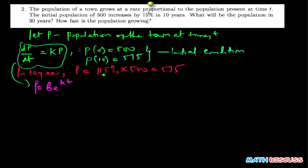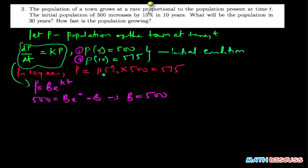The next thing is to implement the initial condition. This is the first condition I'm going to implement. When t equals 0, my p is 500. So: 500 equals b times e to the power 0, and this equals b. This implies that b equals 500. I've been able to find my b to be 500.